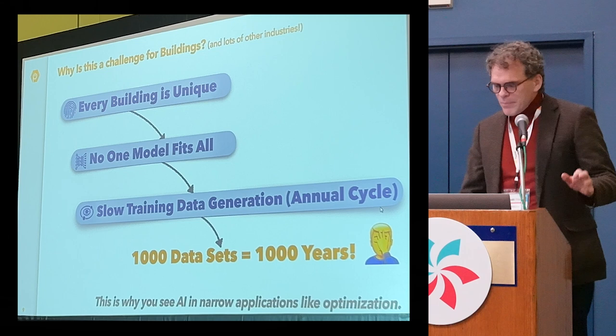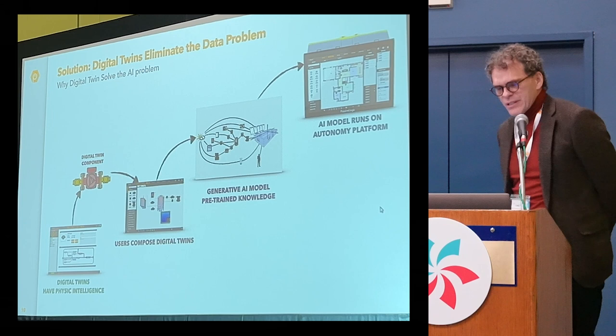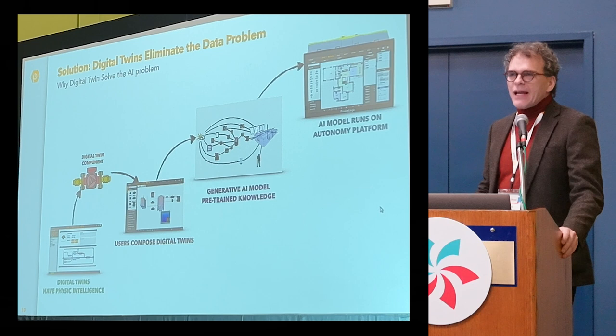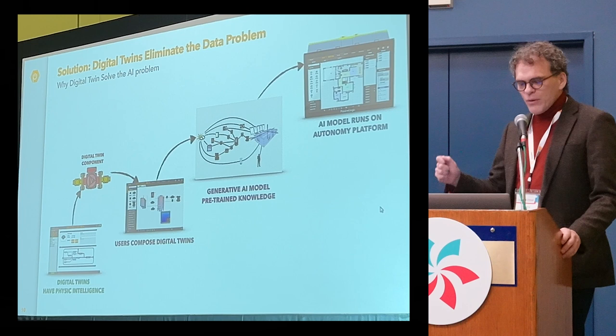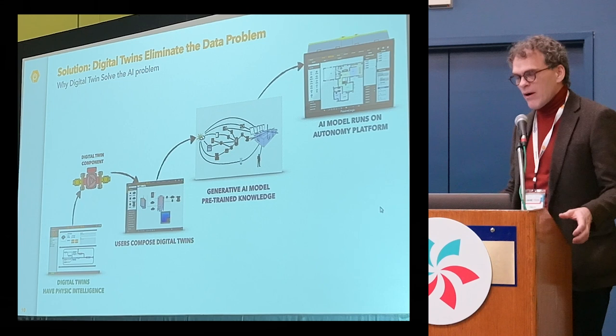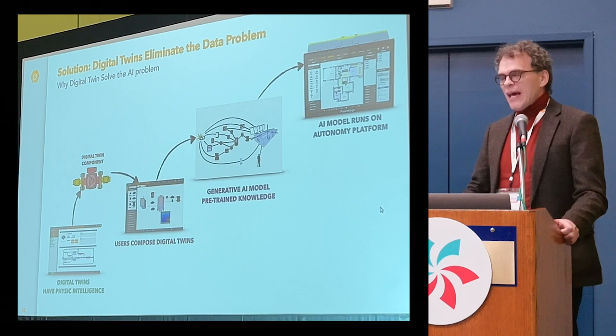Buildings need some other things, and that's one of the areas we're interested in. Digital twins are a way to build models without that training history — you can use the composability of things we already know, the physics we already know, to generate models without all the training history, and then run that across our workflows and enable autonomy.